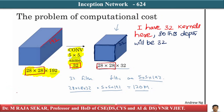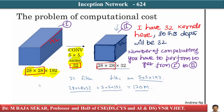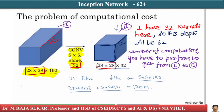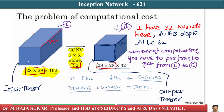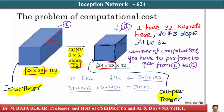How many computations do we have to perform? That's important. We need to find the number of computations required to get from this input 3D tensor to the output 3D tensor.